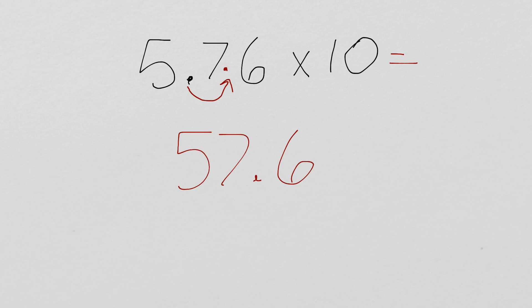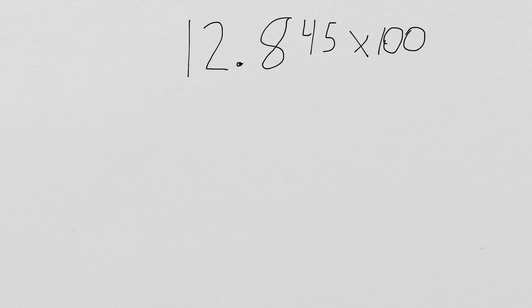Let's try a different one. With this example, we have 12 and 845 thousandths times 100. Now, when it was 10, we just moved the decimal one place to the right. So it would have gone here. But since we have 100, we move it twice.